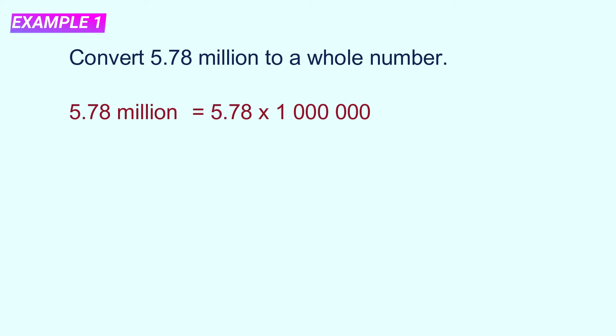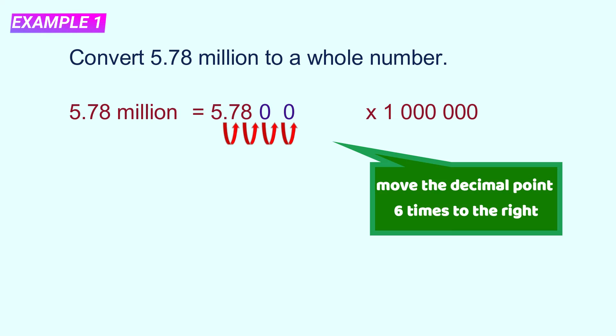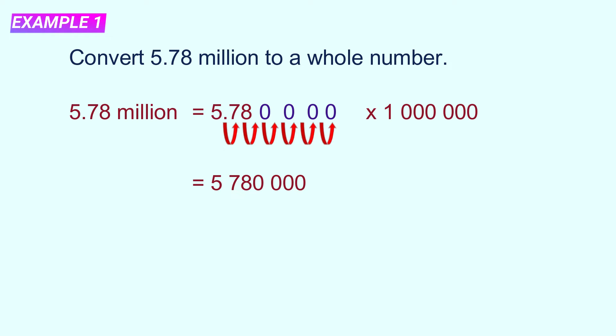When you multiply, move the decimal point. There are 6 zeros in 1 million, so move the decimal point 6 times to the right. The answer will be 5,780,000.